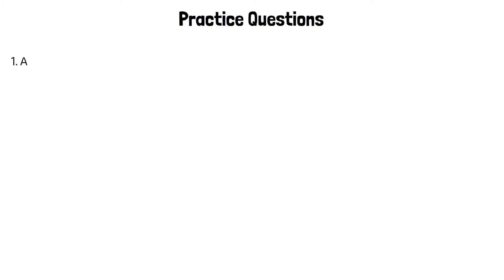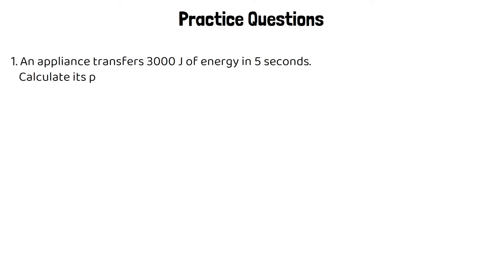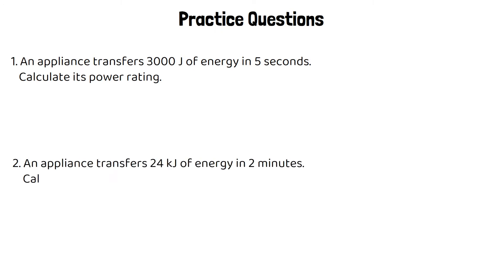Here are a couple of practice questions for you to have a go at using this equation. An appliance transfers 3,000 joules of energy in five seconds — calculate its power rating. And then the second question: an appliance transfers 24 kilojoules of energy in two minutes — calculate its power rating. Check your units on that question. Pause the video and give these a try.